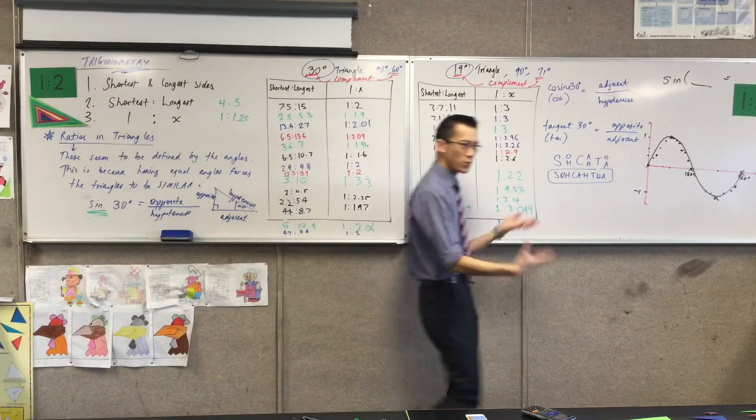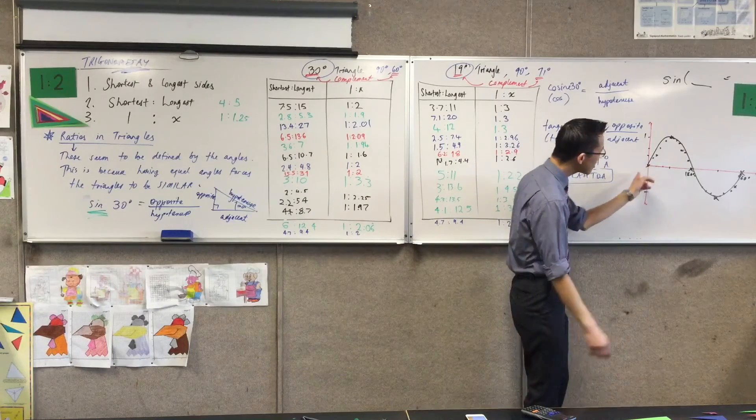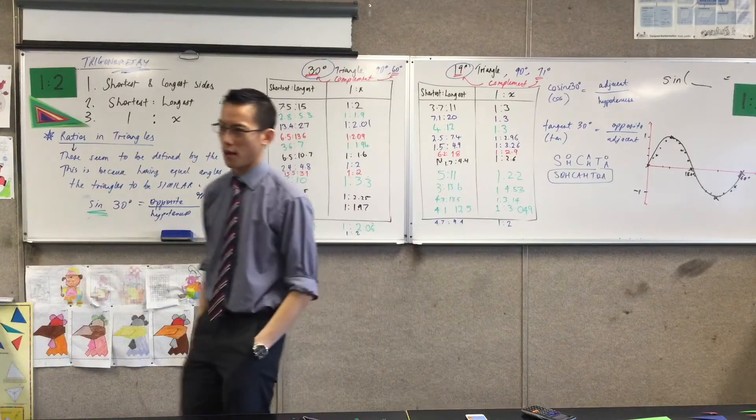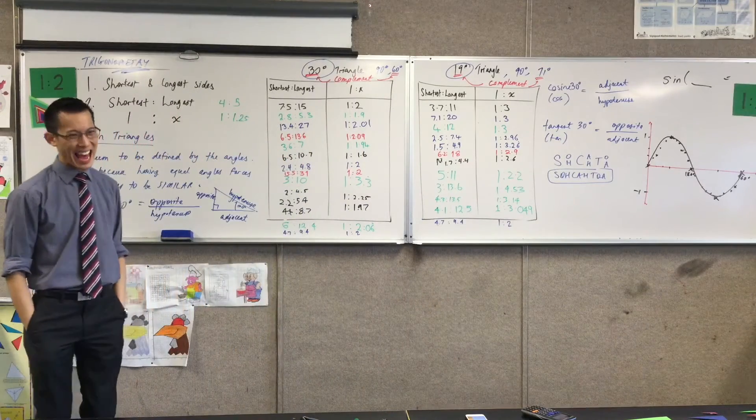But out of that, I've noticed this pattern of ratios. And I've tried to say, well, what happens with other angles? And when I do that, I get this shape, which is quite unmistakably curved. It's not straight at all.